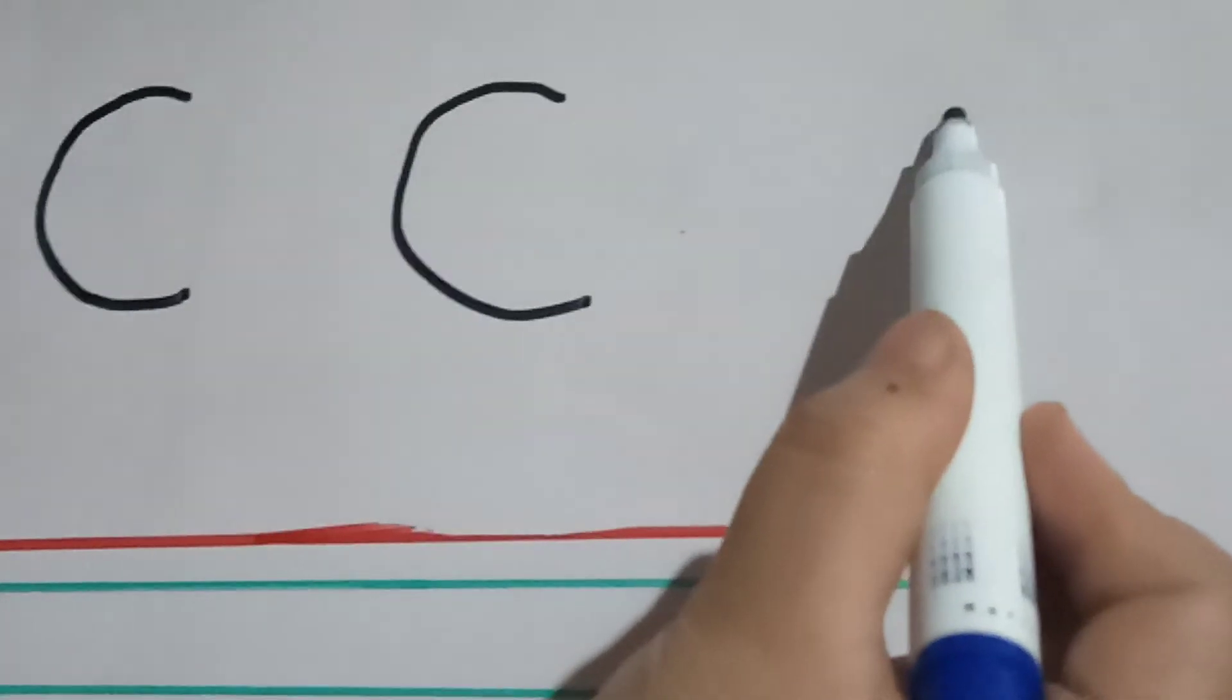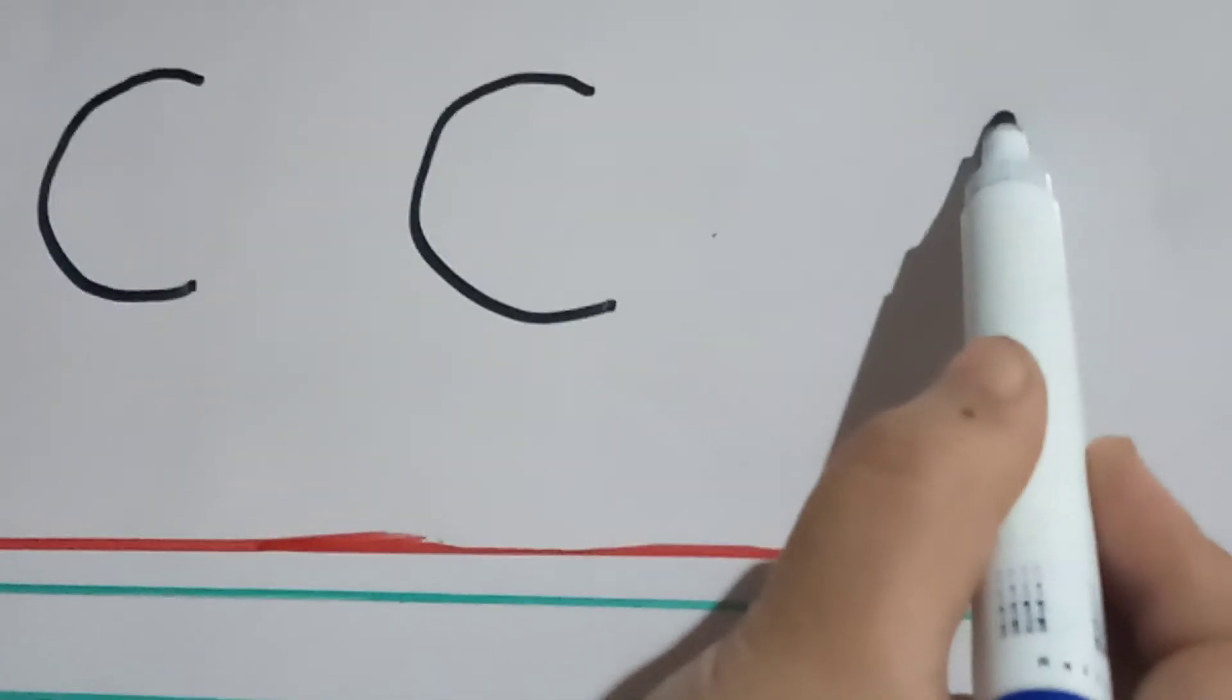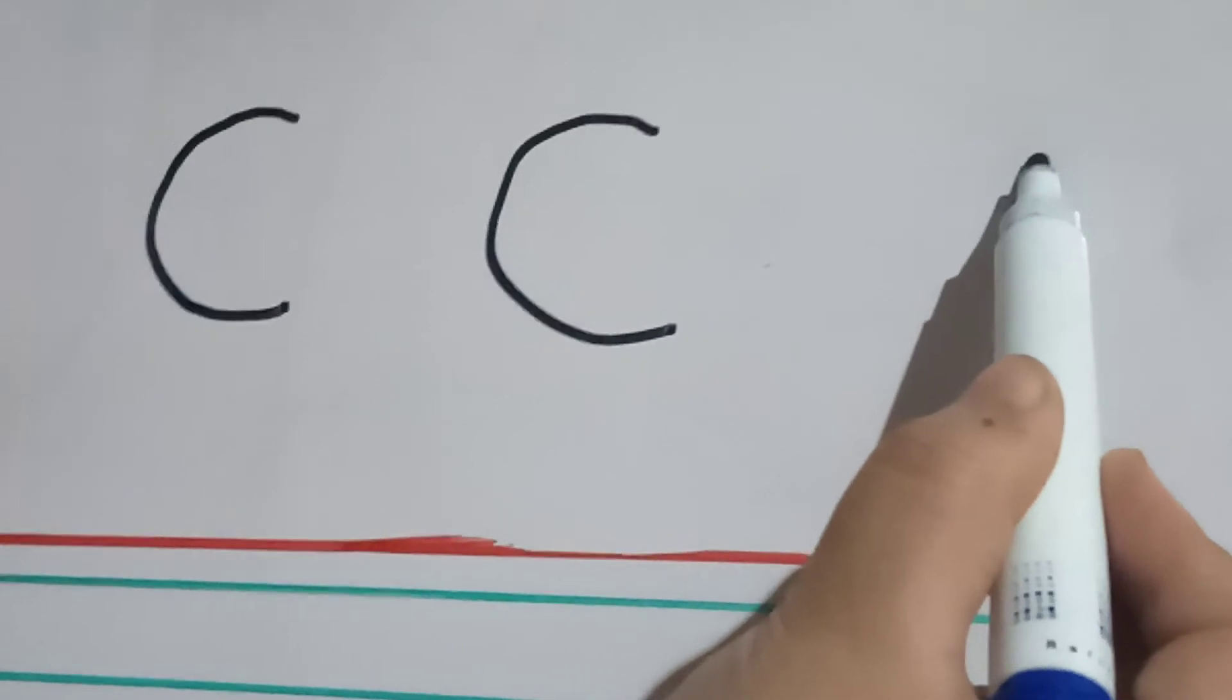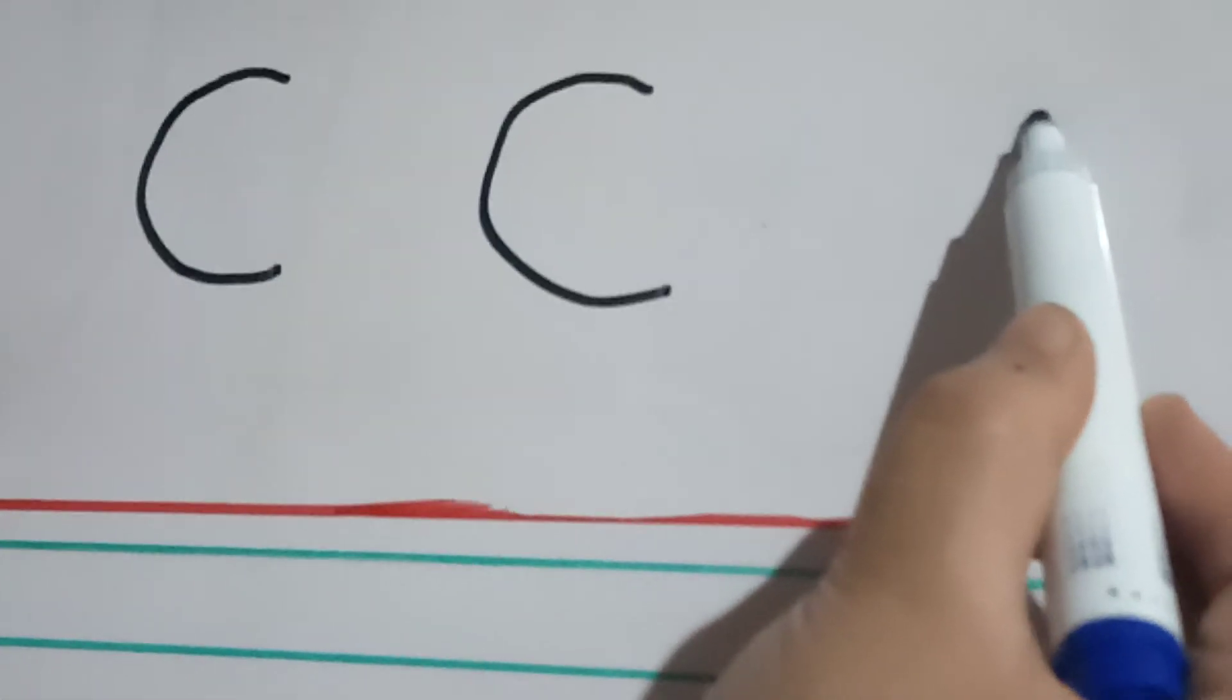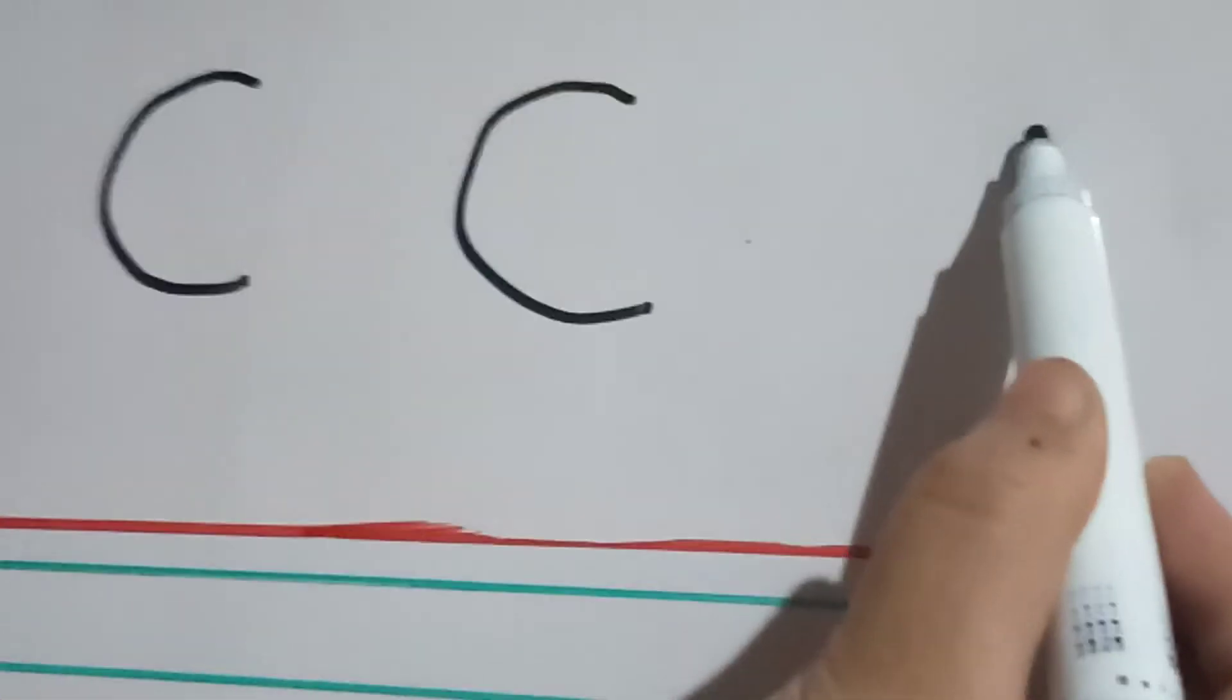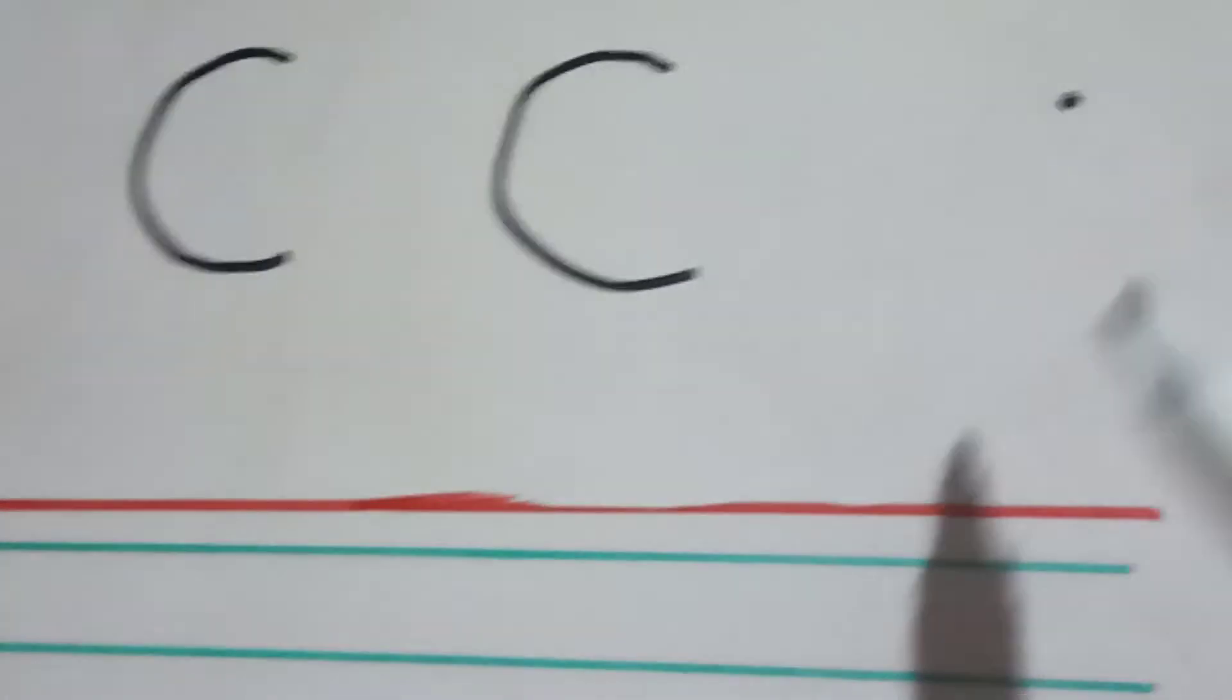Go up. Make a curve. Come down. C. Do more practice. Start from here. Look at my pen. Where is my marker? Yes. Make a curve like this.